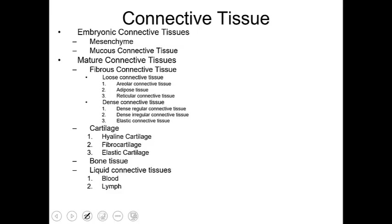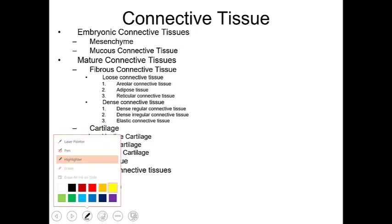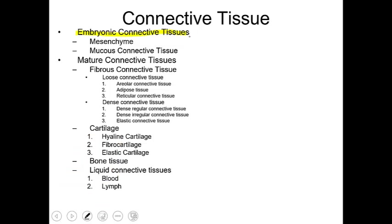When we classify connective tissues, we start with a broad classification: embryonic versus mature. Embryonic connective tissue is anything present in the embryo, fetus, or anything in utero. All mature connective tissue forms arise from the embryonic connective tissue forms. There are several types of mature connective tissues, but only two types of embryonic connective tissue, which differentiate into several types of mature connective tissues.